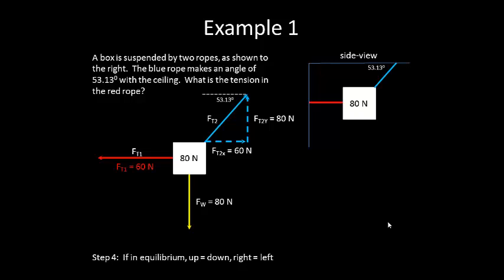So once I know that the tension two in the x direction has to be 60 newtons, my rights need to equal my left. So the tension in the string one must also be equal to 60 newtons.